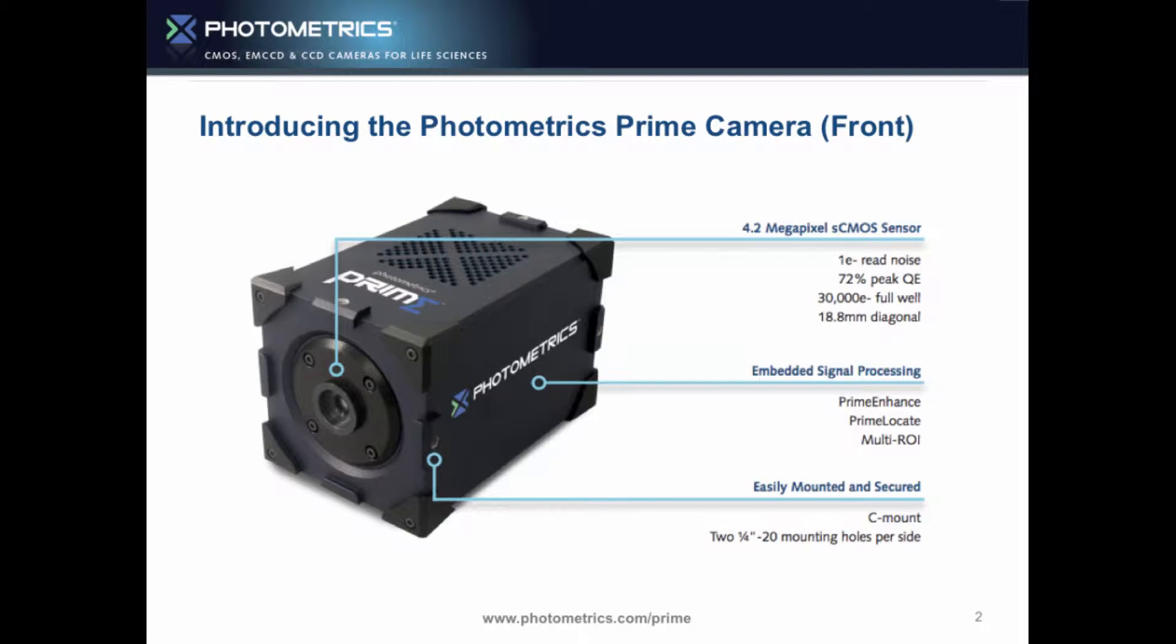Before we get to that, let's look at the camera. We've got a really nice camera. We have the SCMOS sensor with the QE and the read noise and the size. Really, that's kind of the same, but we also have these awesome features: Prime Enhanced, Prime Locate, Multi-ROI. They're inside the camera, computational ways of improving the jobs that you're doing inside the camera.